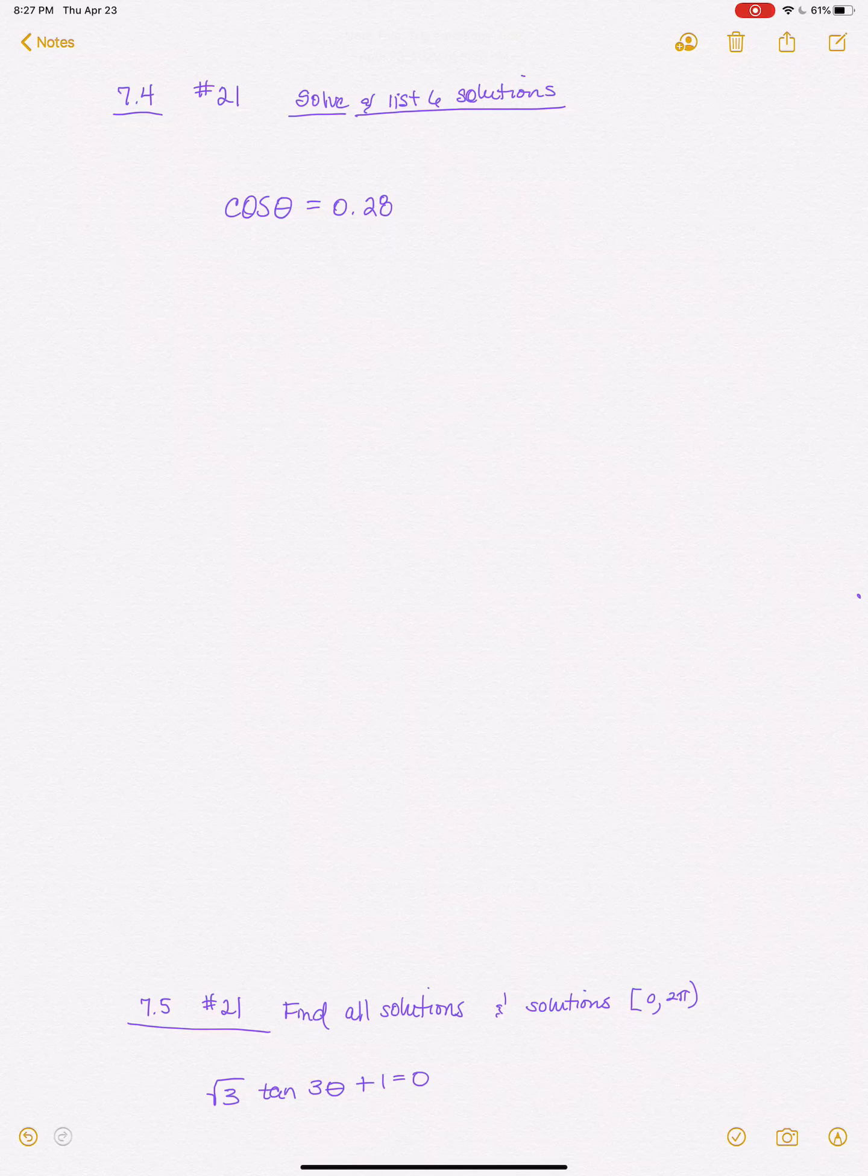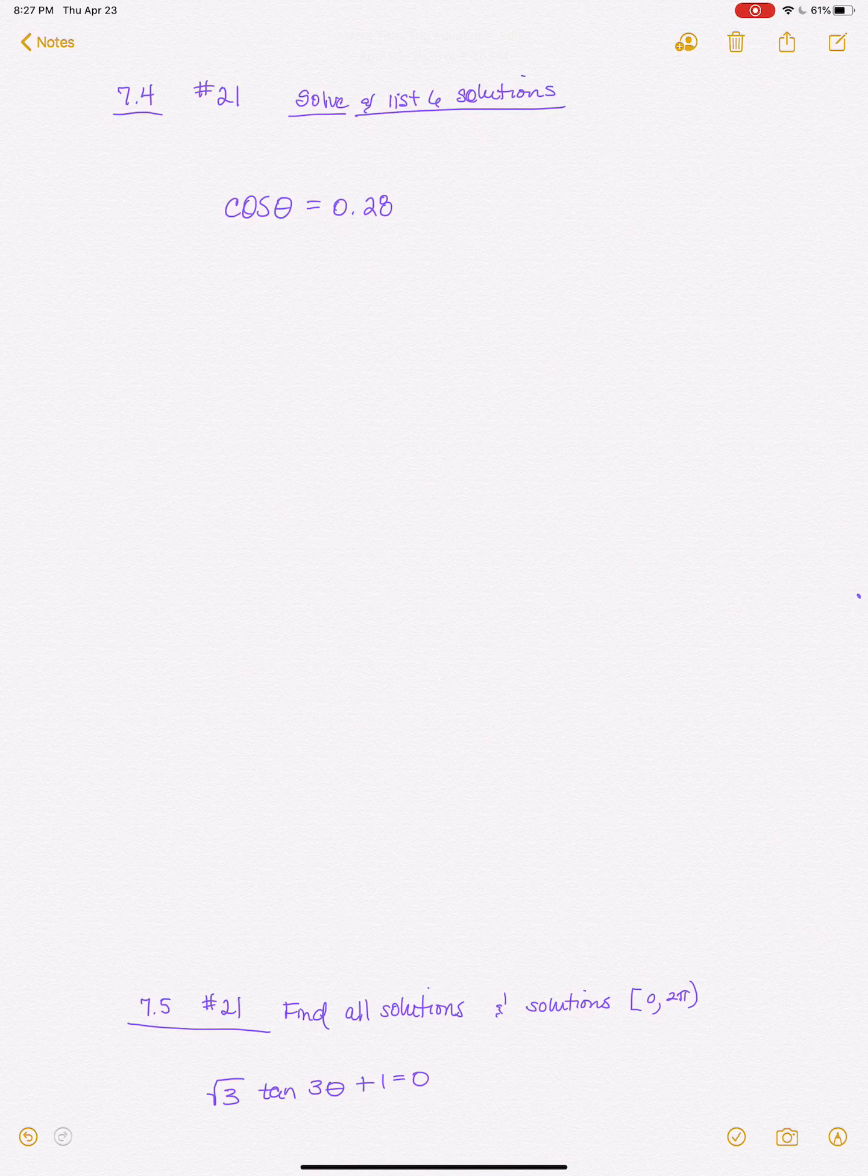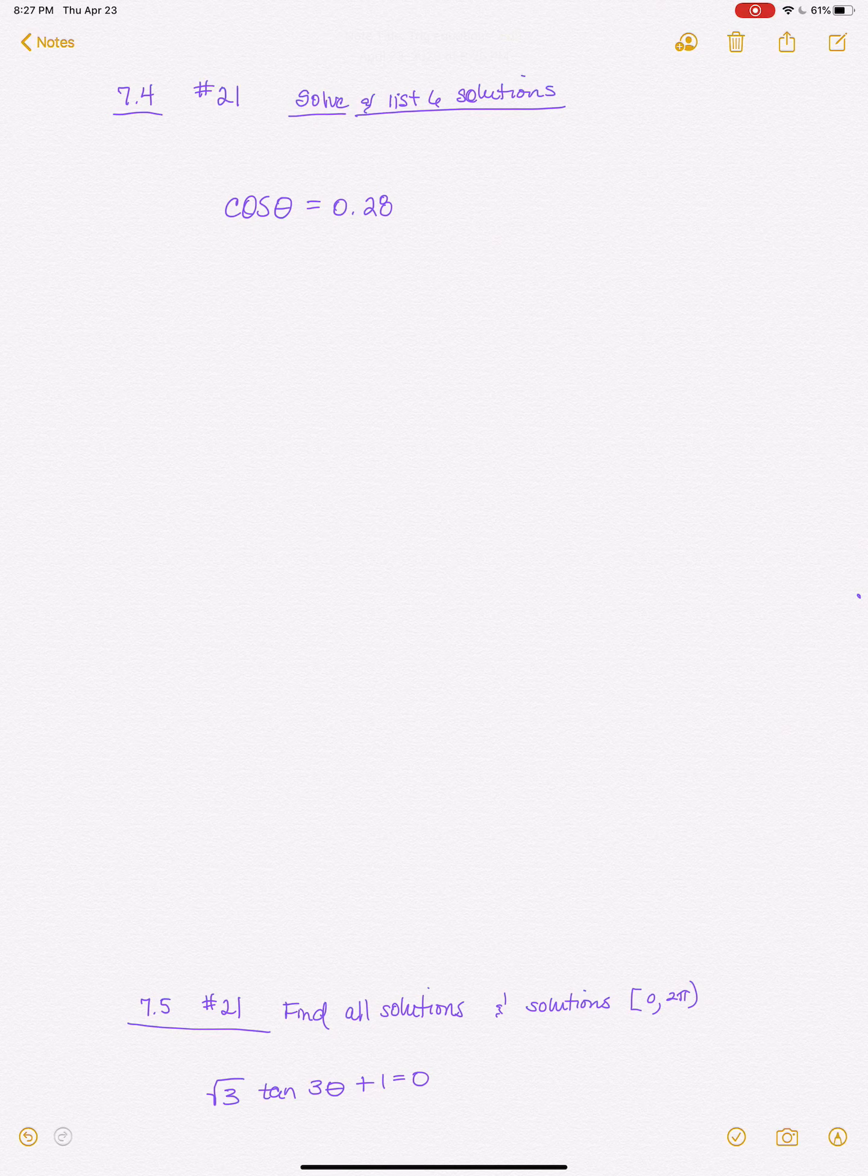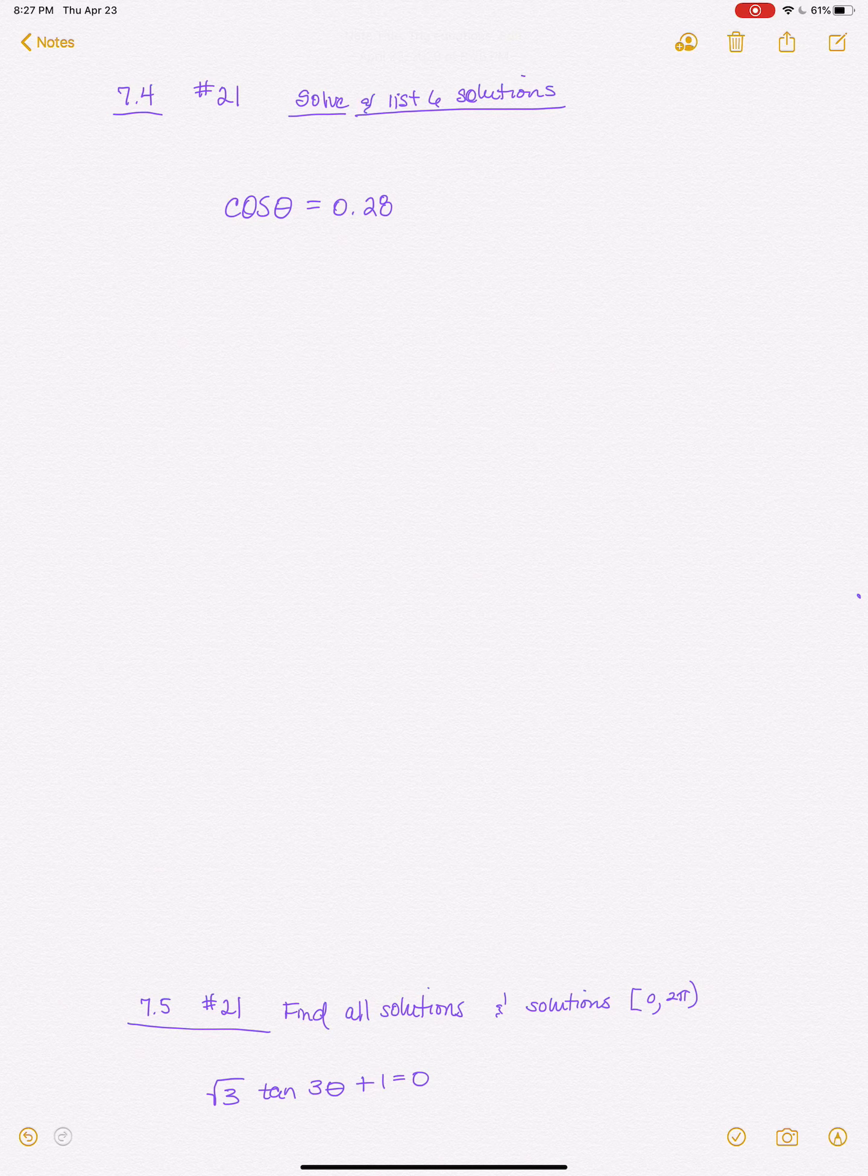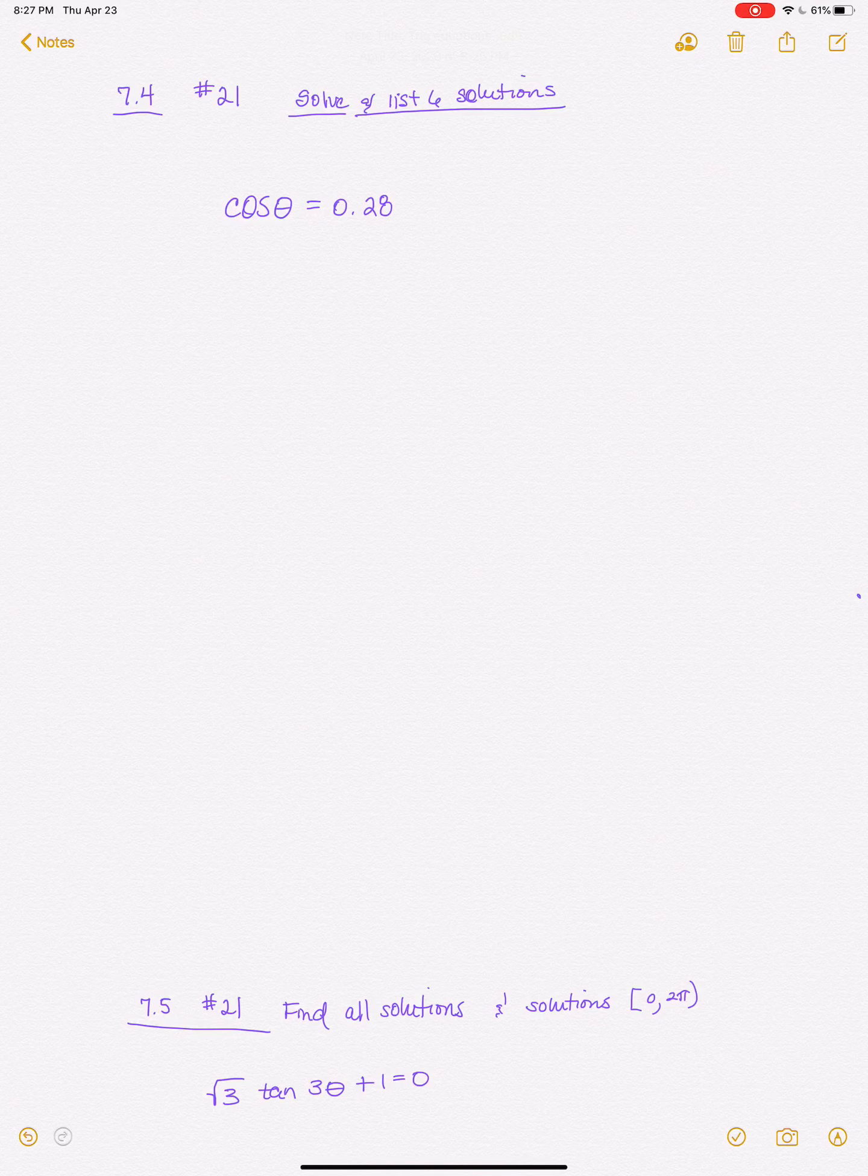Okay, let's work number 21 in 7.4 because I want to make sure that you understand what it's asking for. So it's asking for two things – it's saying to solve the equation and then it's asking for six specific solutions. Alright, so you'll notice in number 21 we've got the cosine of theta equals 0.28. So my cosine theta – my trig ratio and theta is already isolated, so I don't have to do any operations.